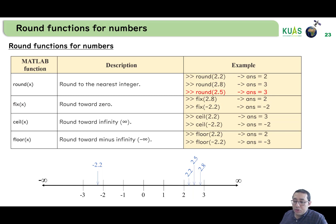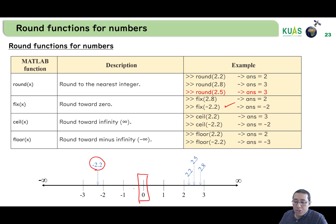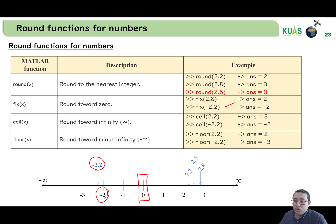And if we consider fix(-2.2), fix rounds towards 0, so the nearest integer in the direction of 0 is -2. So the answer is -2.